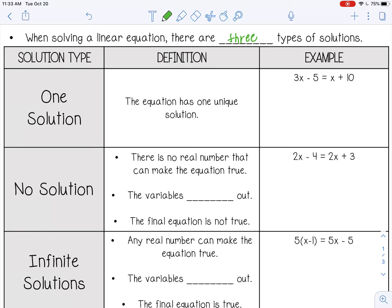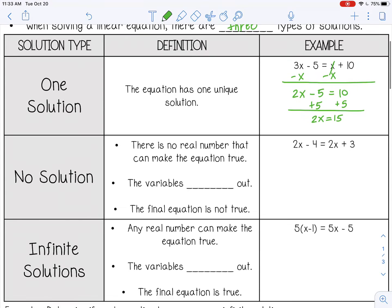So let's go over an example of that. So if I'm solving this equation, I'm going to subtract x first from both sides. Then I can add 5 to both sides. And then divide by 2 on both sides. So x equals 7.5. So that is the one solution that will make this equation equal or true.